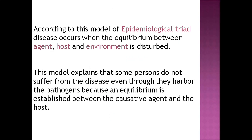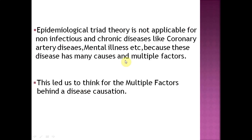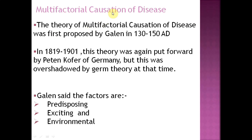All three factors — environment, agent, and host — have a role in producing disease; that is the epidemiological triad. The equilibrium must be disrupted for disease to happen. This model explains why some persons do not suffer from disease even though they have the pathogen, which germ theory could not explain. However, the problem arises when it is not applicable for non-infectious and chronic diseases like coronary diseases and mental illness, where disease is caused by multiple factors.